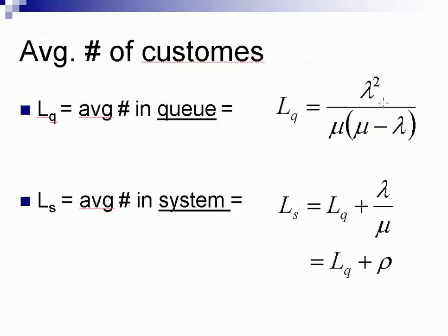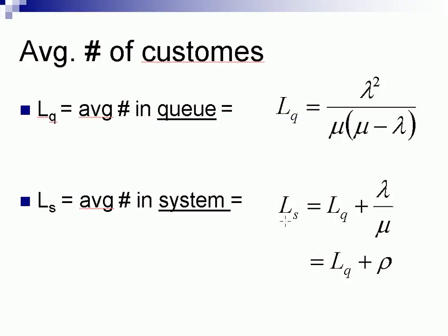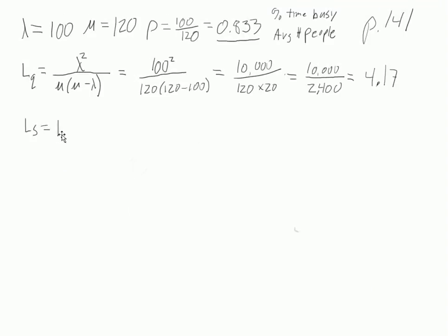So that's Lq, remember, Lq is the number of people in the queue, not in the system but just in the queue. So if we want to know the number of people in the system, look at this formula here. Here it's Ls equals Lq plus rho. So we have Lq plus rho. So that is 4.17 plus rho. So that is 4.17 plus 0.83 is 5.0.